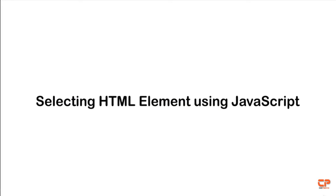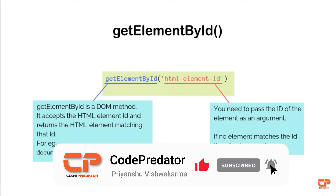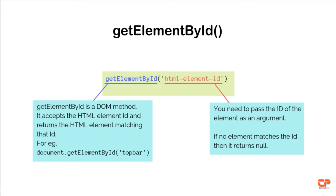Hi guys and welcome back to JavaScript Playground. In today's video we will talk about how to select HTML elements using JavaScript. Unlike CSS, we cannot just do a hash ID name in JavaScript. Instead, JavaScript provides us with an HTML DOM method called getElementById, which accepts an ID string and returns the HTML element with the ID matching that string.